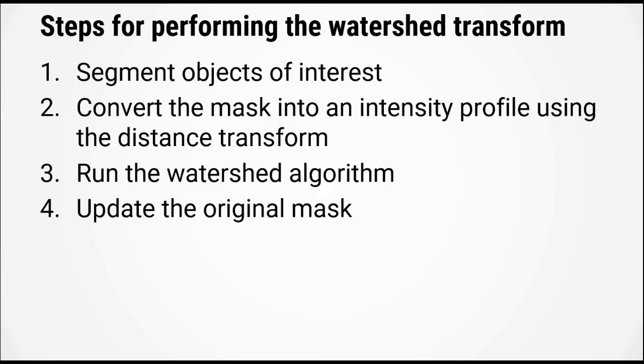The steps for performing the watershed transform are: Number one, segment your objects of interest and generate a mask. Number two, convert the mask into an intensity profile using the distance transform. Number three, run the watershed algorithm. Number four, update the original mask.